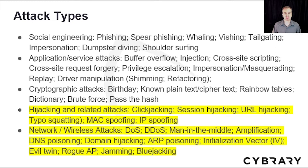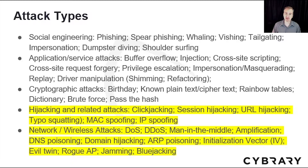Section 1.2 talks about many different types of attacks. In this part, I'll be talking about hijacking and related attacks, such as clickjacking, session hijacking, URL hijacking, MAC and IP spoofing. I'll also discuss network and wireless attacks, such as denial of service, man-in-the-middle, amplification, ARP poisoning, rogue access points, jamming, and bluejacking.